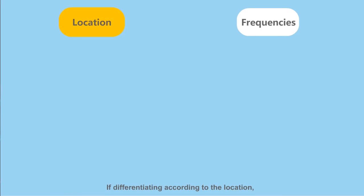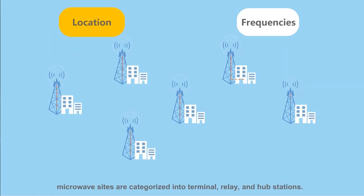If differentiating according to the location, microwave sites are categorized into terminal, relay, and hub stations.